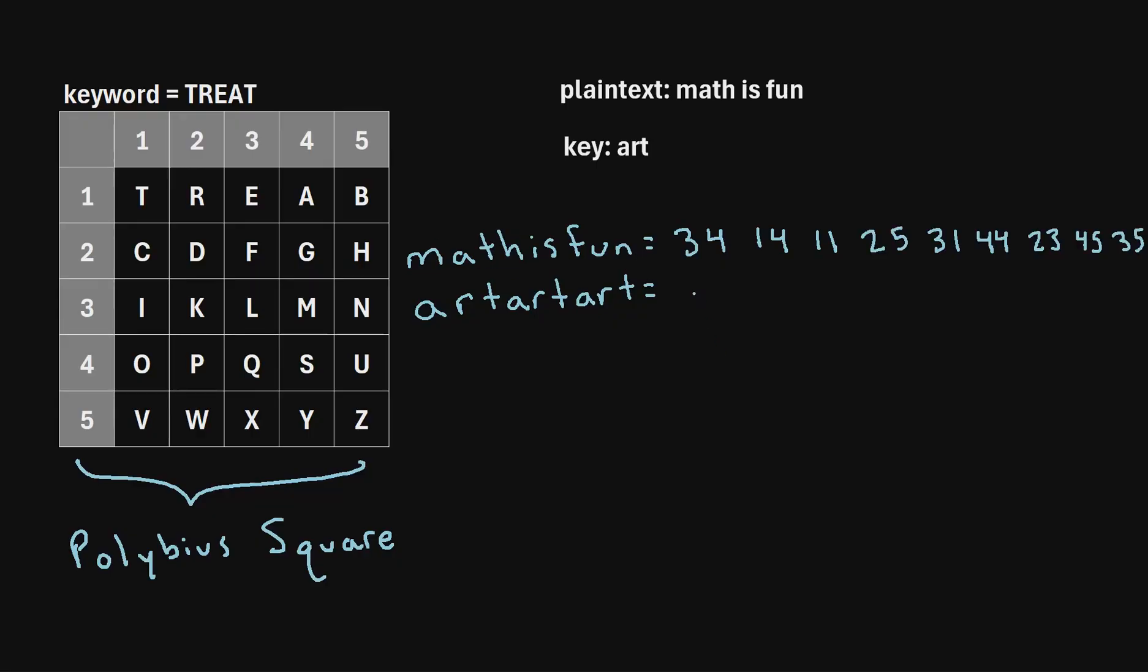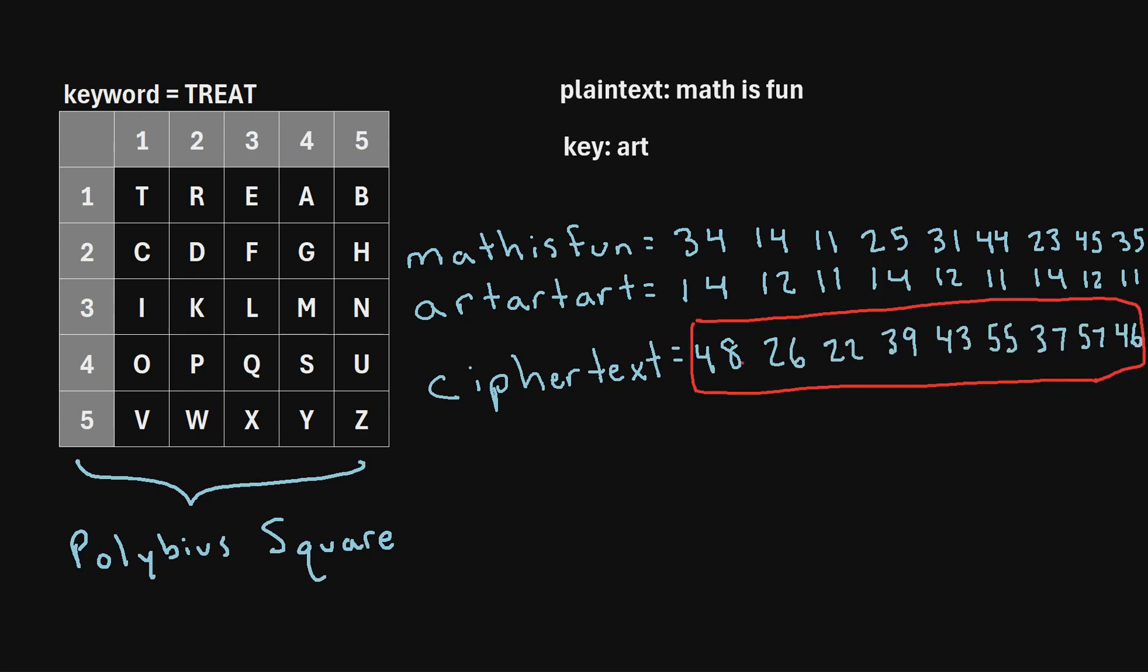And then we'll repeat the exact same process for this key stream. Now, the last step to actually getting our ciphertext is we're just going to add each column value. So we'll do 34 plus 14, which is 48. And then we'll do 14 plus 12, which is 26. And we'll just add each of these columns. So this is our final ciphertext. This is how to encrypt the plaintext mathisfun using the nihilist cipher with a key of art.